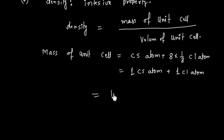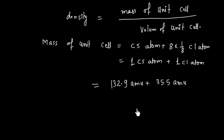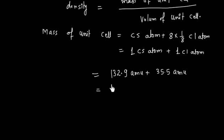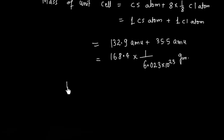Cesium has a mass of 132.9 amu and chlorine has a mass of 35.5 amu. So the mass of the unit cell is 132.9 + 35.5 = 168.4 amu. Converting to grams, we divide by Avogadro's number 6.023 × 10²³, since 1 amu = 1/(6.023 × 10²³) grams.